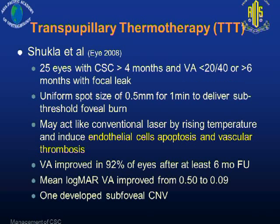Transpupillary thermal therapy makes use of a very uniform-sized laser to deliver a sub-threshold foveal burn. The hypothesis is that it can act like a conventional laser by raising the temperature and inducing endothelial apoptosis and vascular thrombosis. It was shown to be effective in some cases; however, one patient developed a sub-foveal CNV in this series.